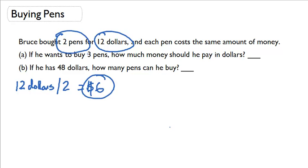Now, if he wanted to buy three pens, how much money should he pay? If each pen is $6, then we need to multiply six by three pens because we're getting three of them, and we get $18. So the answer here should be $18.